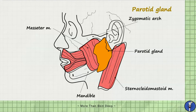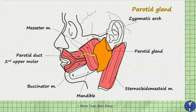Importantly, the parotid duct is responsible for carrying secretions produced by the parotid gland to the oral cavity. The parotid duct emerges from the anterior edge of the parotid gland and crosses the face transversely to pierce the buccinator muscle, where it opens into the oral cavity at the second upper molar.